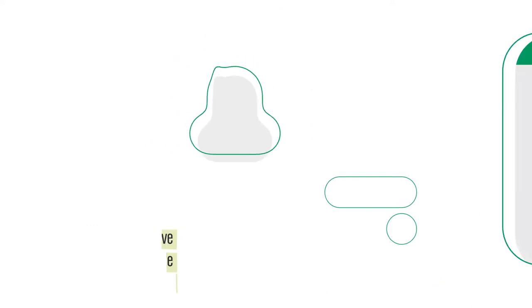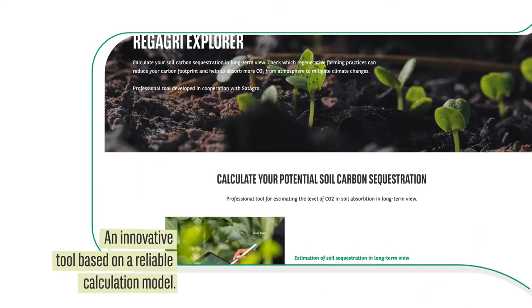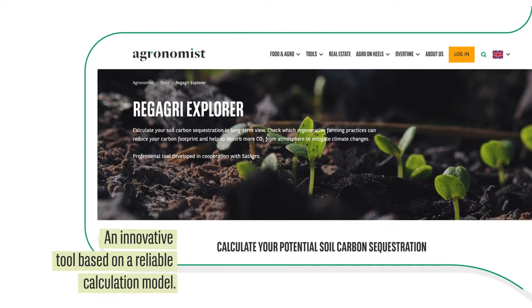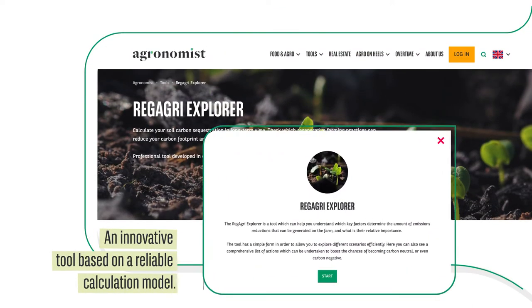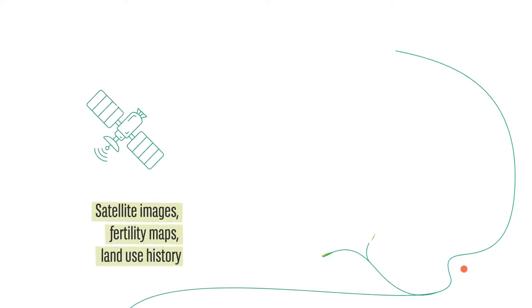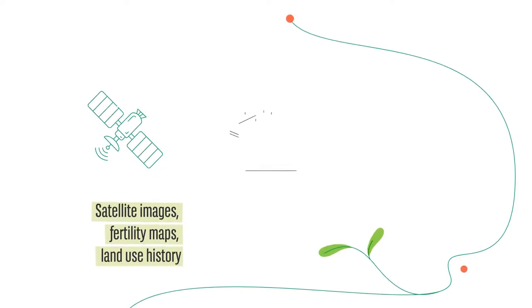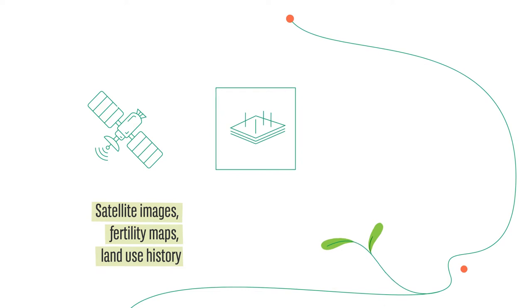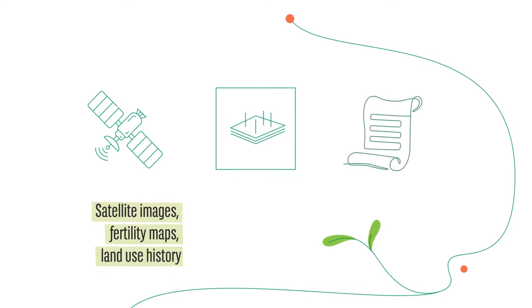REG AgriExplorer is the first tool in Europe which can calculate your potential soil carbon sequestration using satellite imagery, fertility maps and land use history.